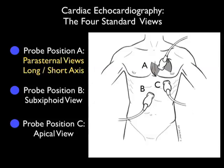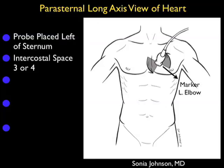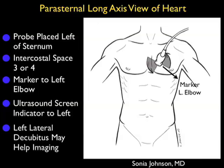There's a great deal of information we can get from the parasternal long axis plane, so let's learn how to perform the examination. For this examination, it's optimal to use a small footprint phased array type probe that can easily sit between the ribs. We're going to place the probe just left of the sternum at about intercostal space three or four, with the marker dot on the probe aimed down towards the patient's left elbow, with the ultrasound screen indicator towards the left of the screen. This will align the probe in the long axis of the heart.